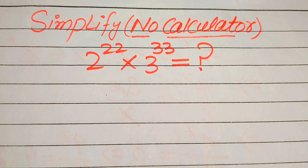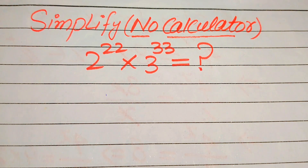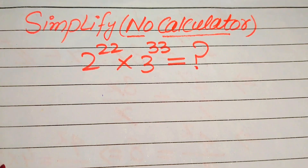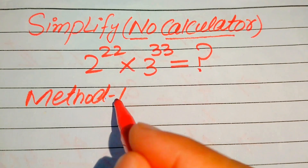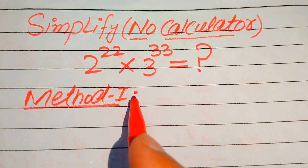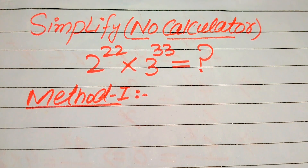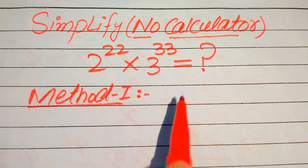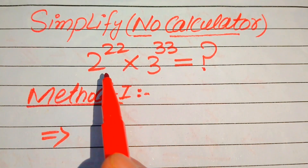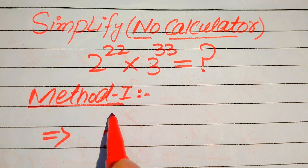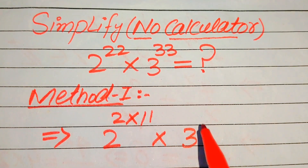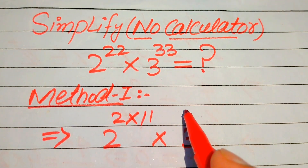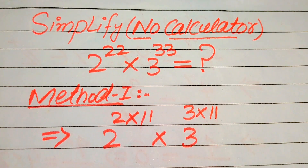If you have any other method in mind, please don't hesitate to write it in the comment section. We solve this problem using two methods. Now we move towards the first method. In the first method, we focus on the exponent of both terms. We write 2 to the power of 22 as 2 to the power of 2 multiplied by 11, and 3 to the power of 33 as 3 multiplied by 11.